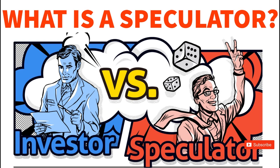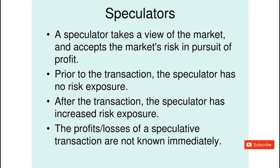As you can see in the image, it has investor versus speculator, because I am going to bring up a differentiation between the two and then bring it all together. First, let's look at what this states about speculators. Let's read it together: a speculator takes a view of the market and accepts the market's risk in pursuit of a profit. Prior to the transaction, the speculator has no risk exposure.